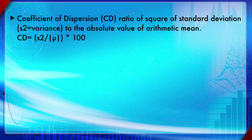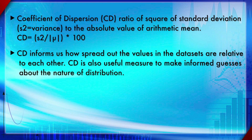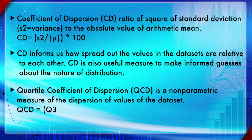Coefficient of Dispersion (CD) is the ratio of the square of the standard deviation to the absolute value of the arithmetic mean — the only difference from CV is that the numerator is SD squared. CD informs us how spread out values in a data set are relative to each other, and it is also a useful measure to make informed guesses about the nature of distribution using the Variance-to-Mean Ratio (VMR).